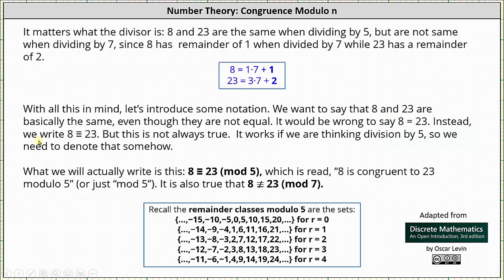It matters what the divisor is. Eight and 23 are the same when dividing by five but are not the same when dividing by seven, since eight has remainder one when divided by seven and 23 has remainder two when divided by seven.